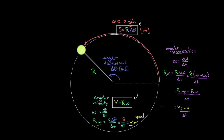So r·alpha equals the change in speed over time. You might be tempted to call this the acceleration, but be careful. True acceleration is the change in velocity per time, and here we used speeds, not velocity vectors. So this is the change in speed per time — still an acceleration, but not the entire acceleration.